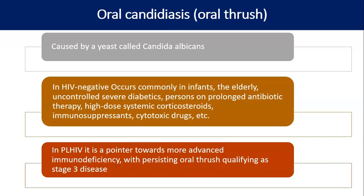Oral candidiasis, otherwise known as oral thrush, is caused by a yeast called Candida albicans. In HIV-negative individuals, it occurs usually in infants, the elderly, those with uncontrolled diabetes, prolonged antibiotic use, high-dose systemic steroids, immunosuppressants, or cytotoxic drugs. Otherwise, it is not common in HIV-negative individuals.